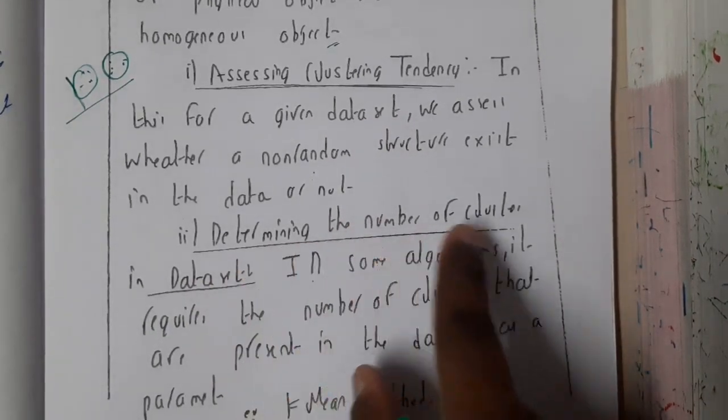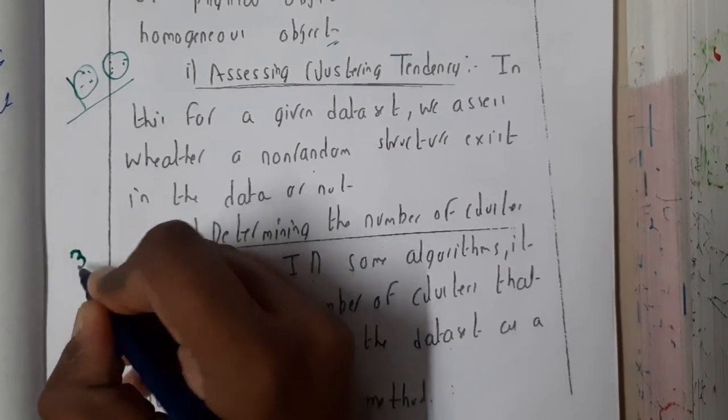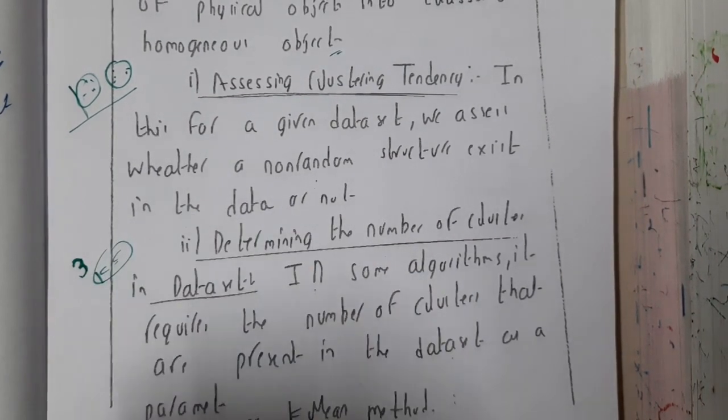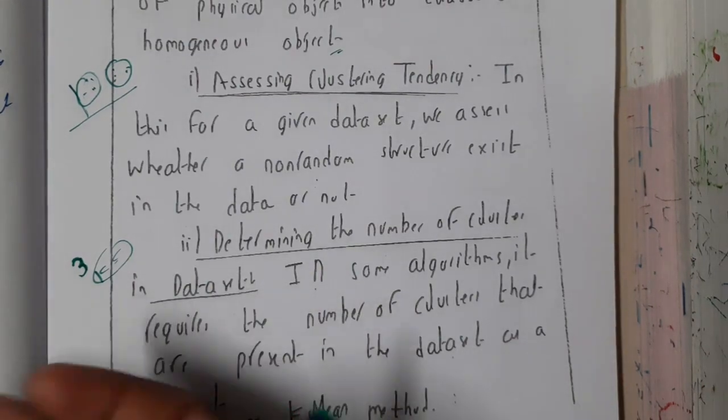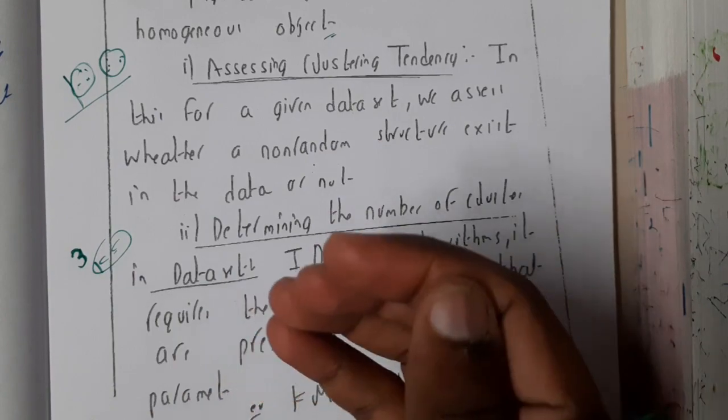The second is determining the number of clusters in the data set. So basically, in the question itself they will be saying, right? Three clusters in K-means or K-medoid. They will be saying the number of clusters which they are expecting.